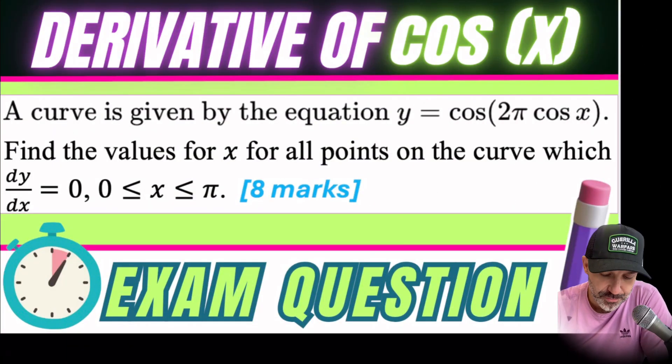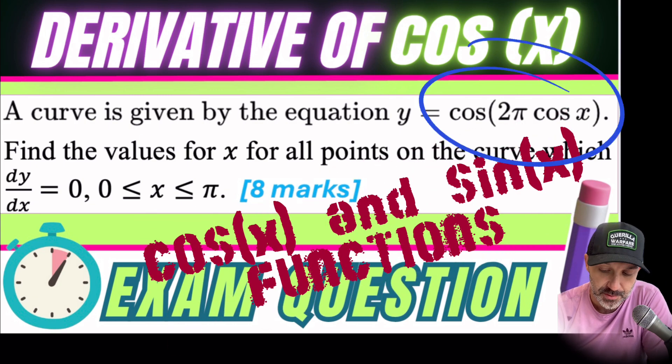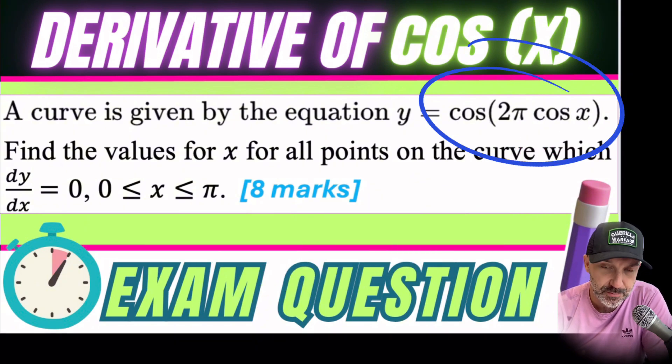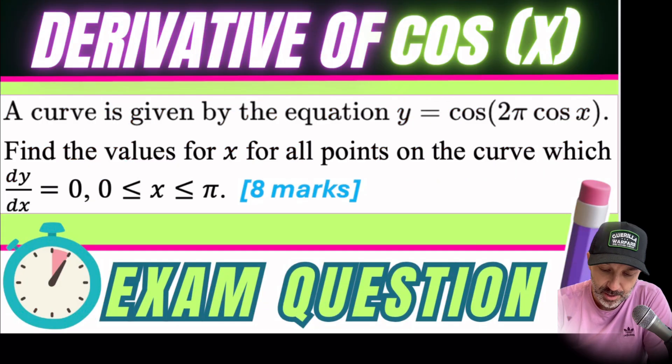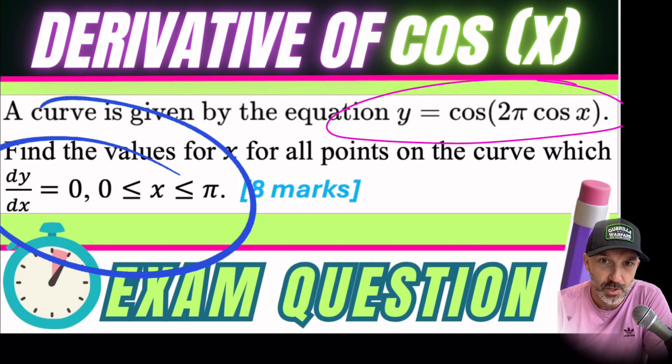Okay, this is part of the channel where I go through a past exam question. This one is to do with differential calculus and involves trigonometric functions. It's worth eight marks, should be able to do this in eight minutes or less. Now I do think it has certainly a tricky element towards the end. So let's see how we go.